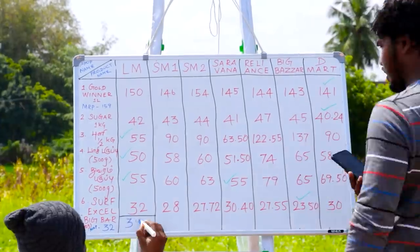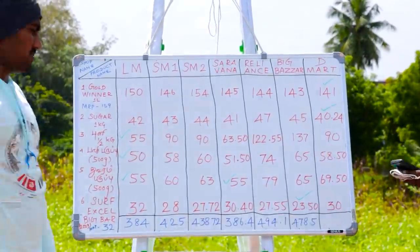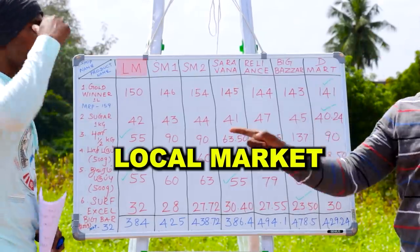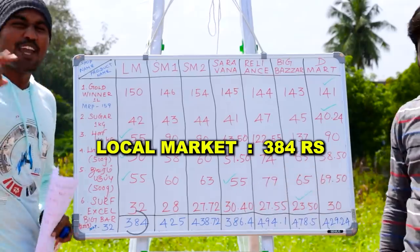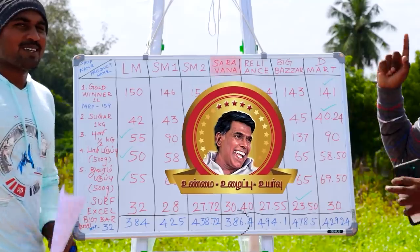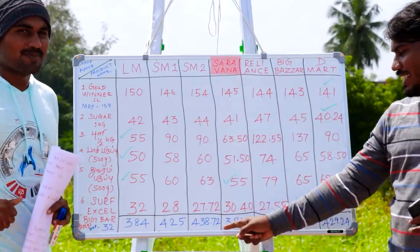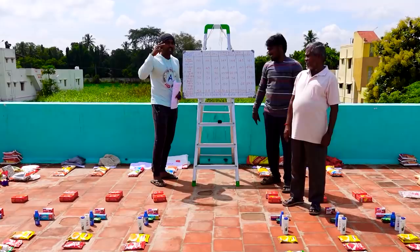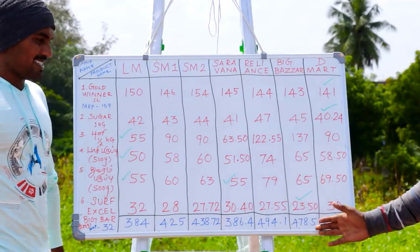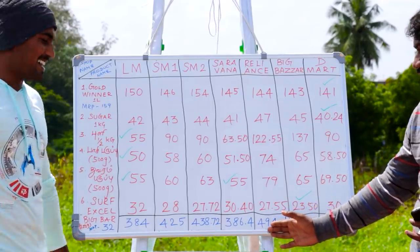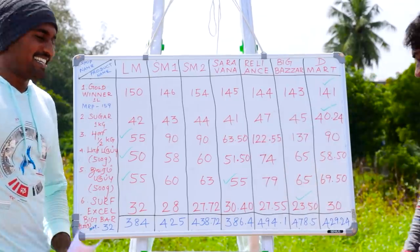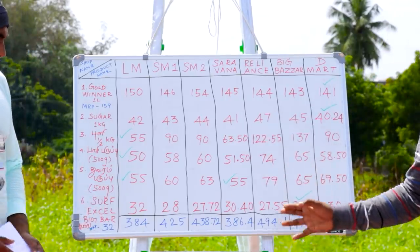The overall total is 384,000 versus 425,000. The overall winner is 50,000. We are absolutely local market — where they are at 384,000, they are 380,000. Saravana Stores is 380,000. They are 4,000. But if you look at the price, you will see 494,000 versus 100,000. What is the price difference? You will see the price difference.